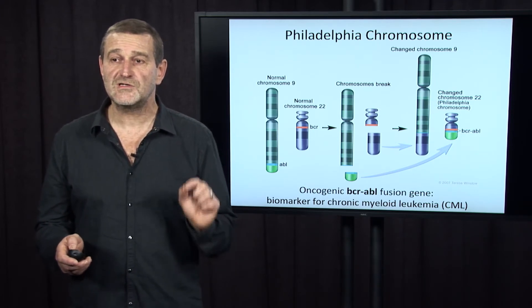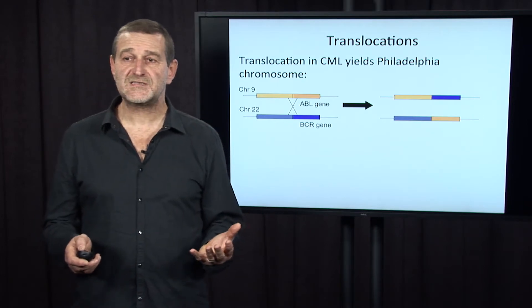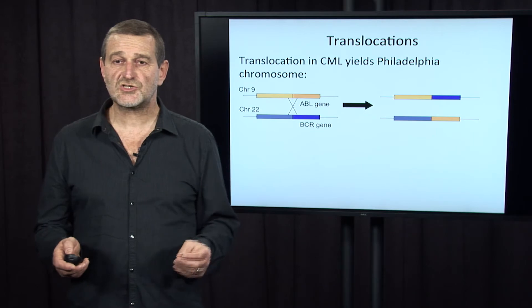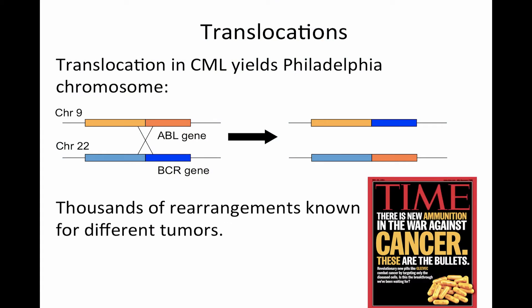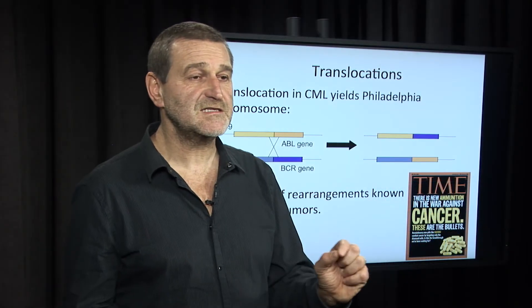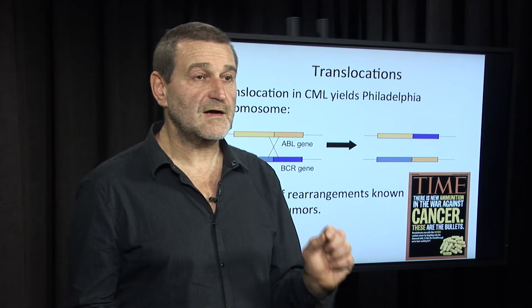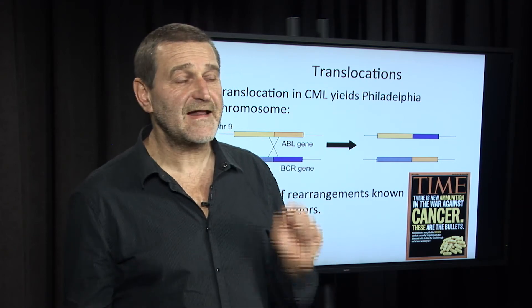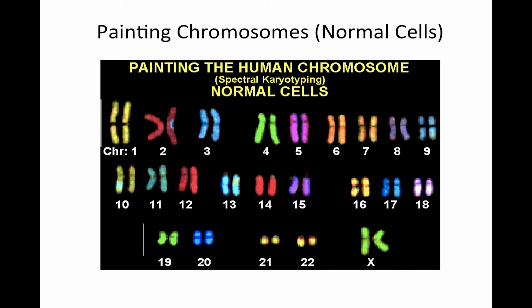This oncogenic fusion gene is actually a hallmark of CML. From a computational perspective, the operation I just showed you is called translocation, and it exchanges segments of different chromosomes between each other. Thousands of different rearrangements and many translocations are known for different tumors. Knowledge about these rearrangements is very important for studies of cancer. In particular, the ABL-BCR fusion gene in CML, since biologists knew how it looks, enabled the development of a very efficient cancer drug called Gleevec.